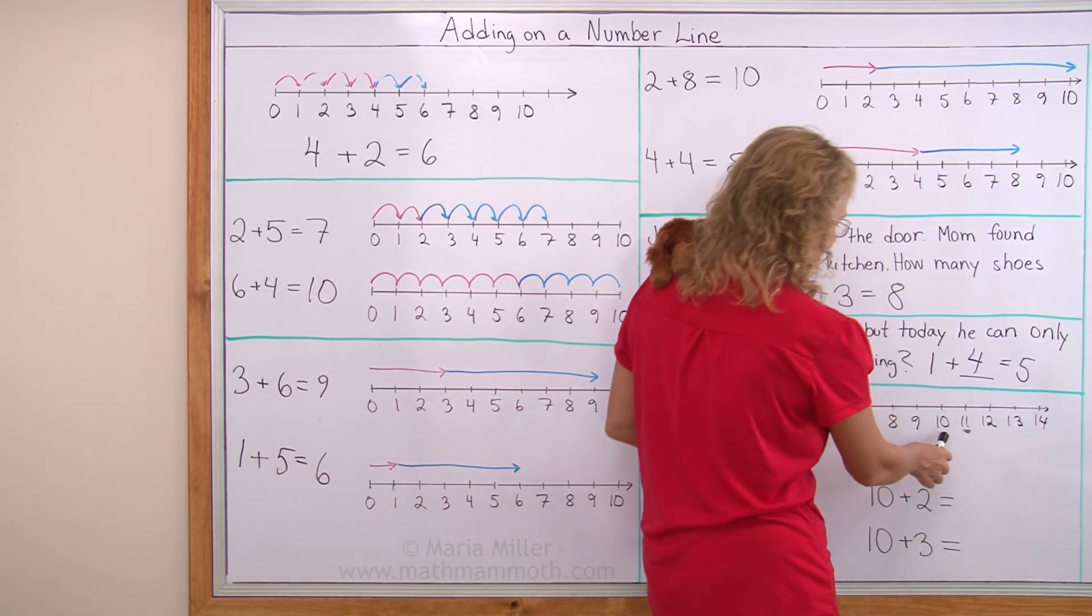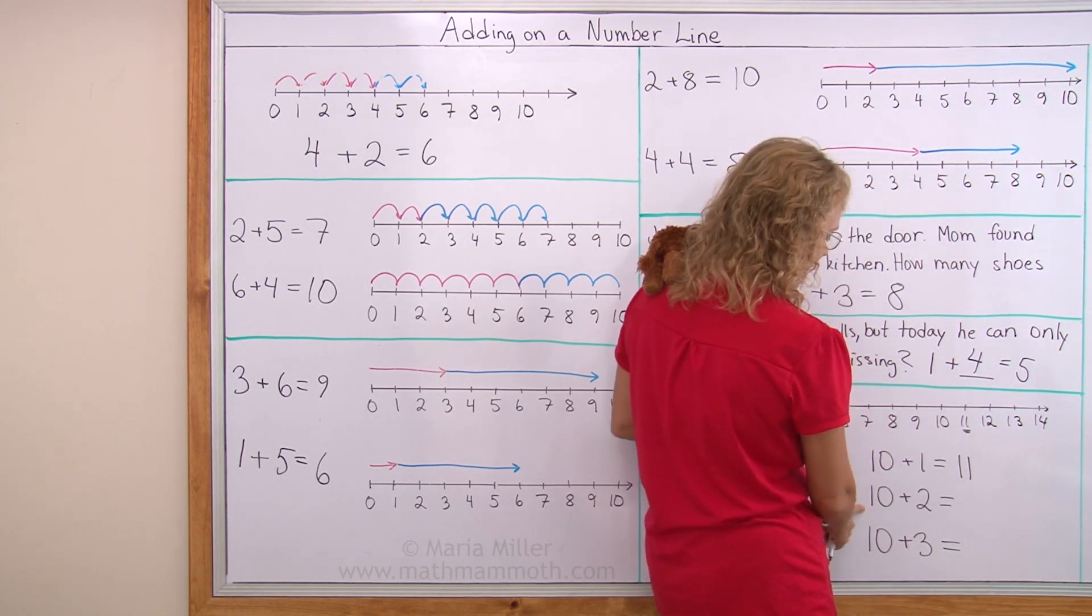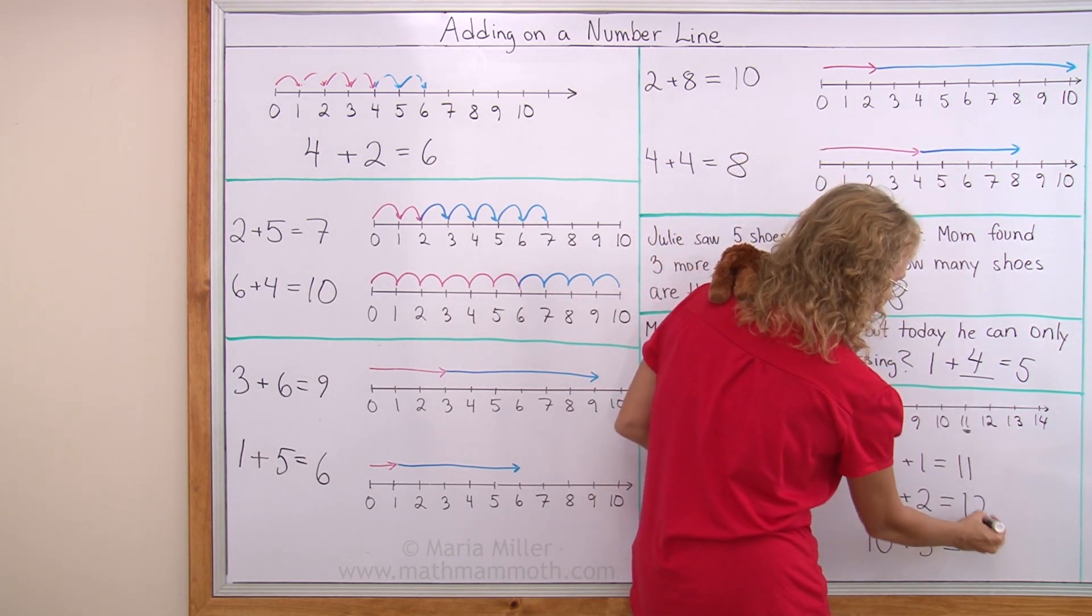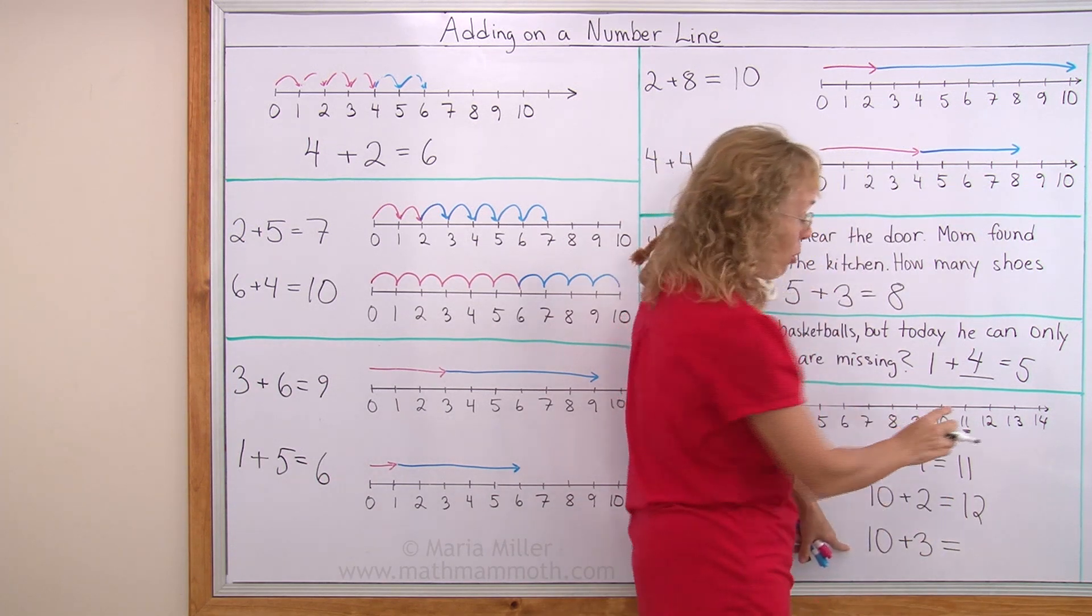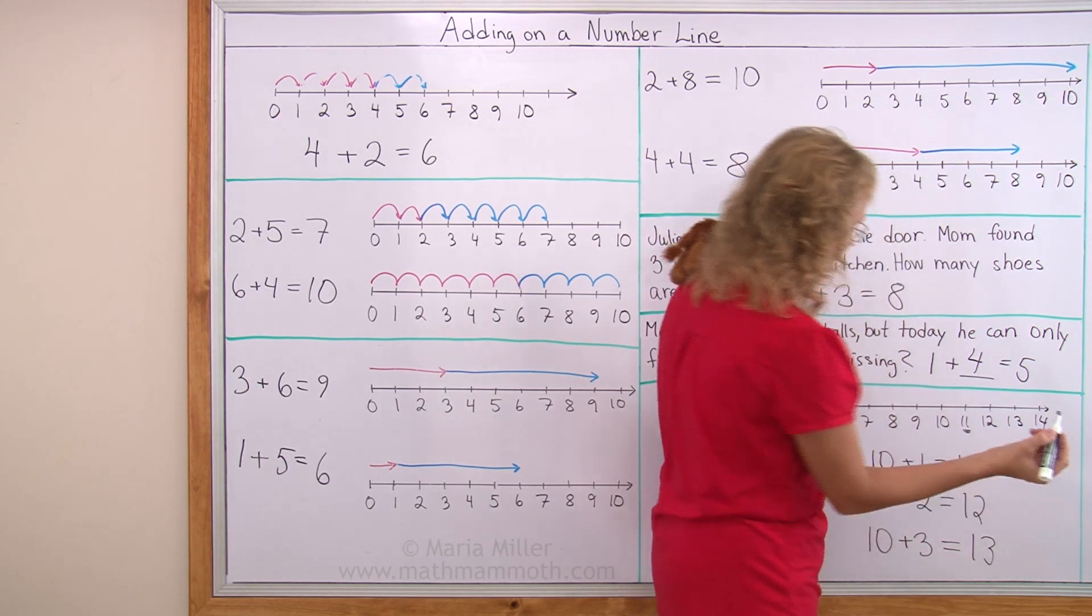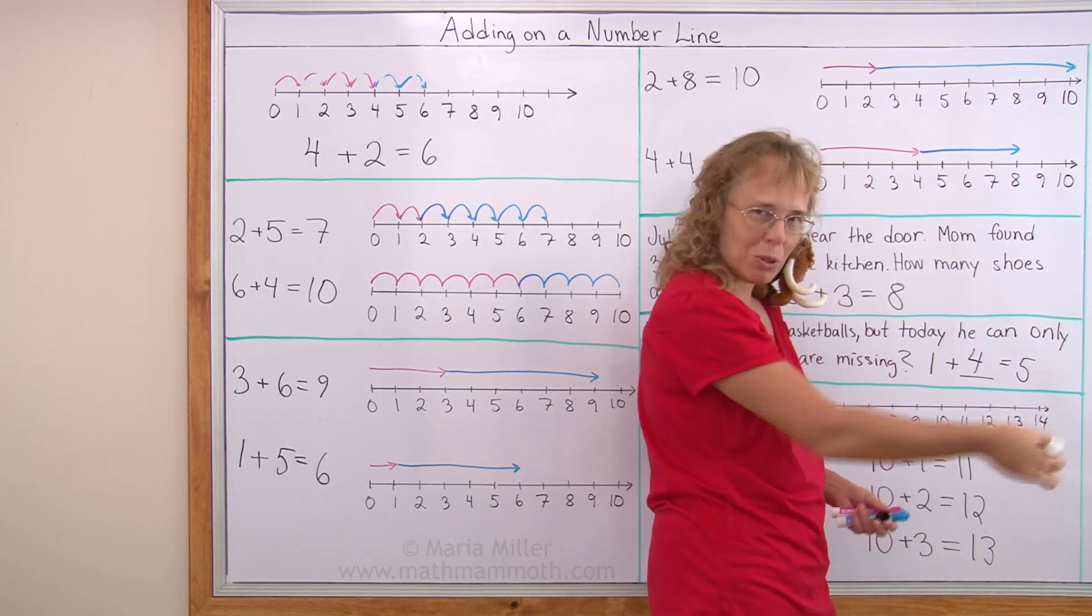10 plus 1. You are at 10 and you jump 1, so you go to 11. You are at 10 and you jump 2 more, 12. And what's this last one? If you know these numbers, it is 13. And we have the same pattern here. 1, 2, 3, 11, 12, 13. Just one more each time.